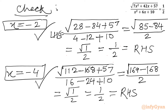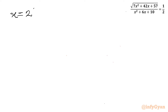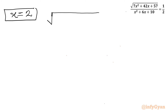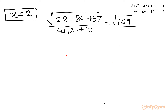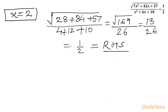Third solution, x = 2: LHS is √ of [7(4) + 42(2) + 57] / [4 + 12 + 10] = √(28 + 84 + 57) / 26 = √(169/26). Numerator is 169, denominator is 26, so √(169/26) = 13/26 — actually √(169) = 13 over 26 = 1/2 = RHS. Hence verified.